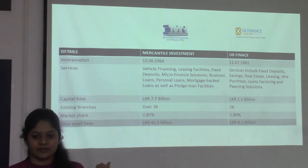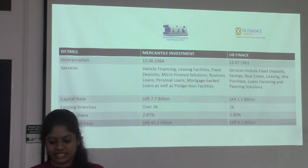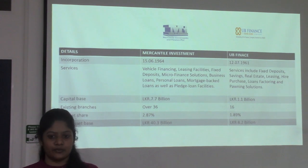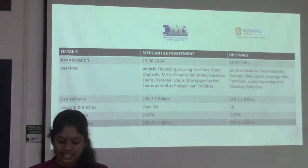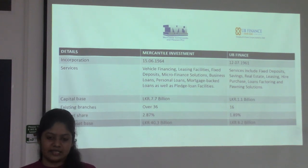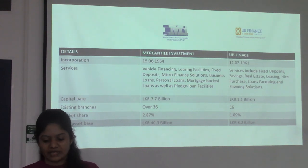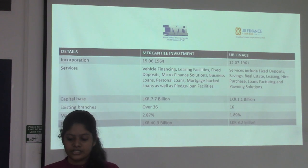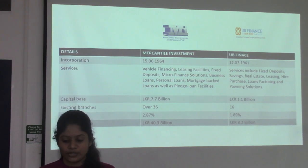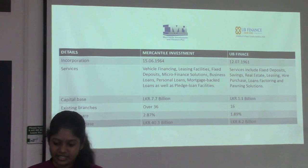Here I am going to compare both companies — Mercantile Investment and UB Finance — with respect to incorporation, services, capital base, existing branches, market share, and total asset base. Mercantile Investment was incorporated on June 15, 1964, whereas UB Finance was incorporated on July 12, 1961.